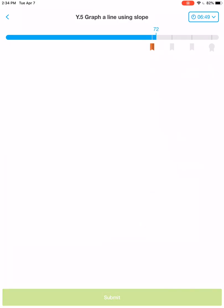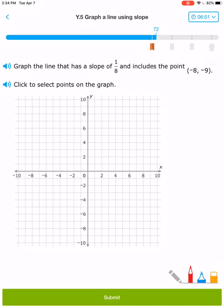Let's go to the more challenging problems. All right. So I need to plot at (-8, -9). Negative 8, negative 9 is going to be down here. And then a slope of 1/8. So that means I need to go up 1 over 8.